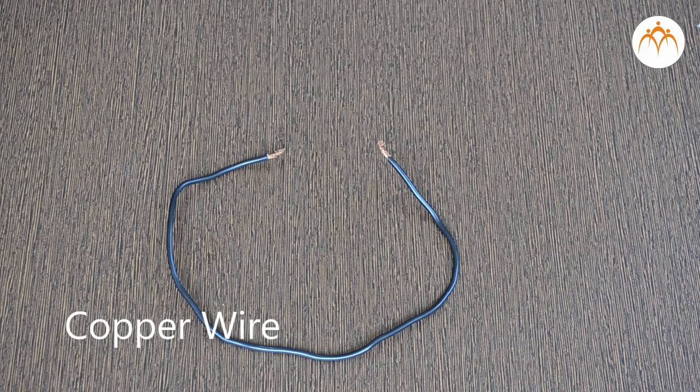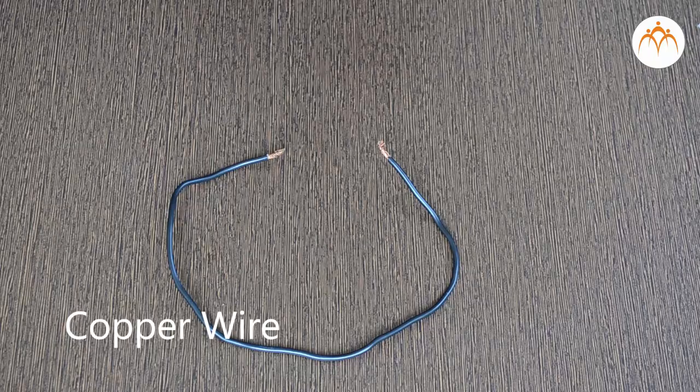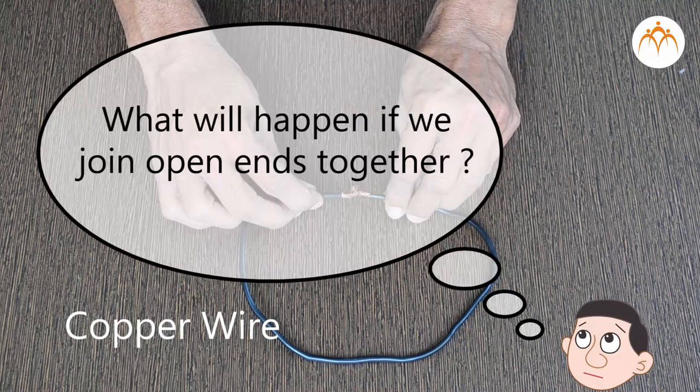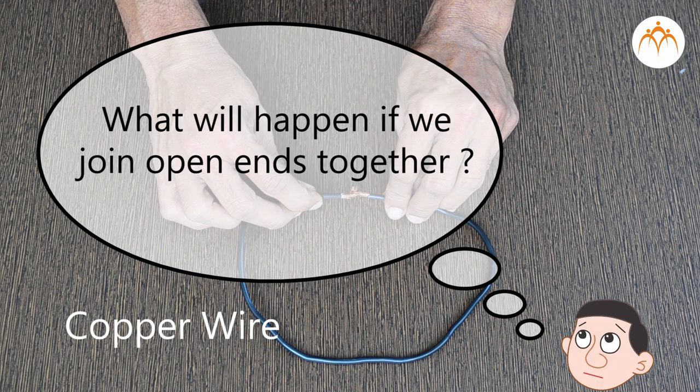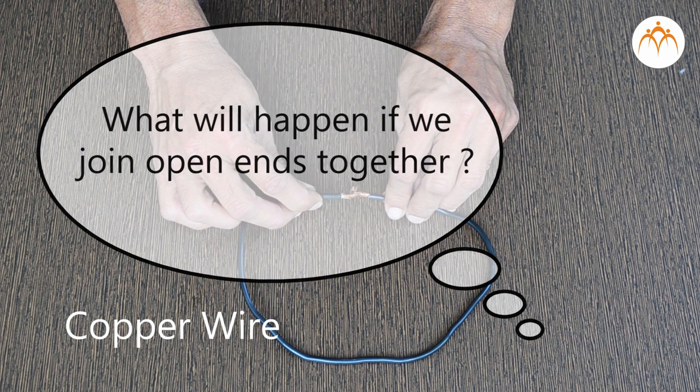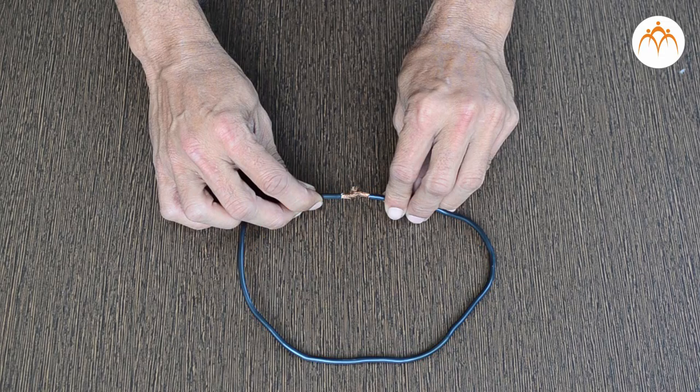See, this is a copper wire. As you know, it is full of free electrons. What will happen if we join the open ends together? Will electrons start flowing through the wire in circles? Not really. They will still move around randomly because there is no electric force acting on them.